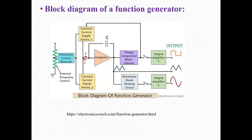Now this is the block diagram of a function generator. Here is the external frequency control, frequency control network, constant current supply source 1, constant current supply source 2, integrator, voltage comparator multivibrator, resistance diode shaping circuit, output amplifier first, and output amplifier second.